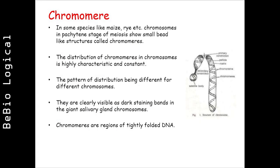In some species like maize, rye, etc., chromosomes in the pachytene stage of meiosis show small bead-like structures called chromomeres. The distribution of chromomeres in a chromosome is highly characteristic and constant, with the pattern of distribution being different for different chromosomes. They are clearly visible as dark staining bands in the giant salivary gland chromosomes. Chromomeres are regions of tightly folded DNA.